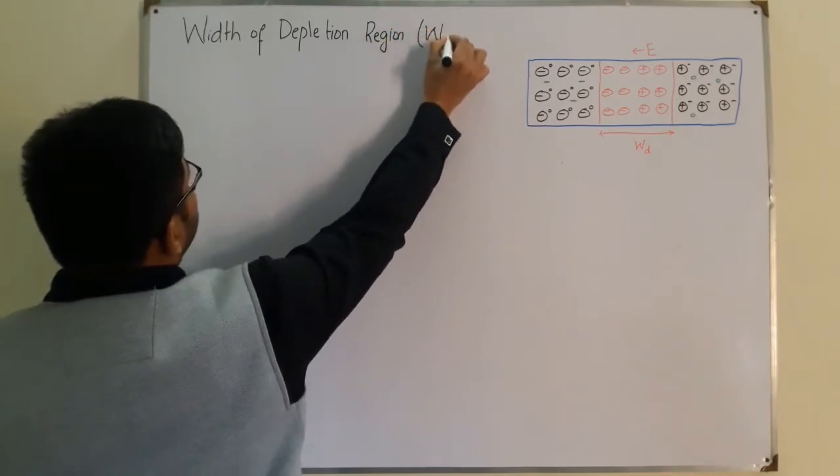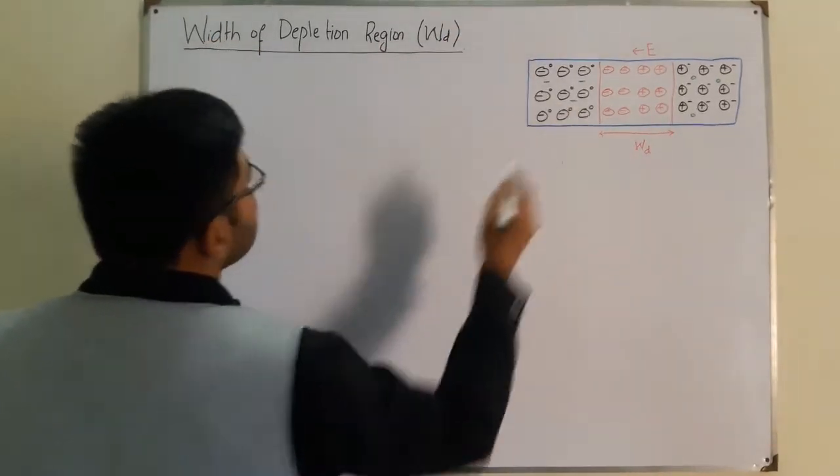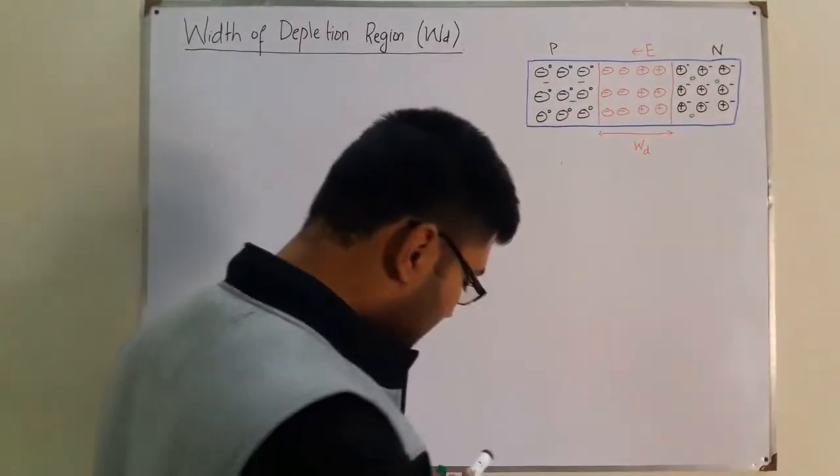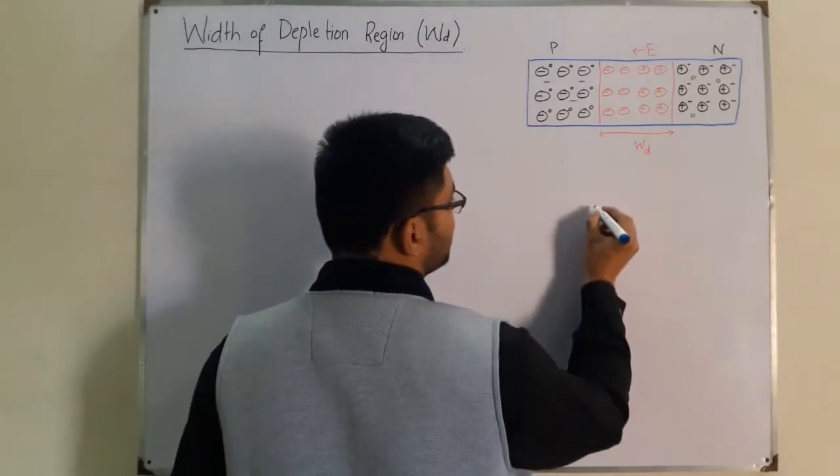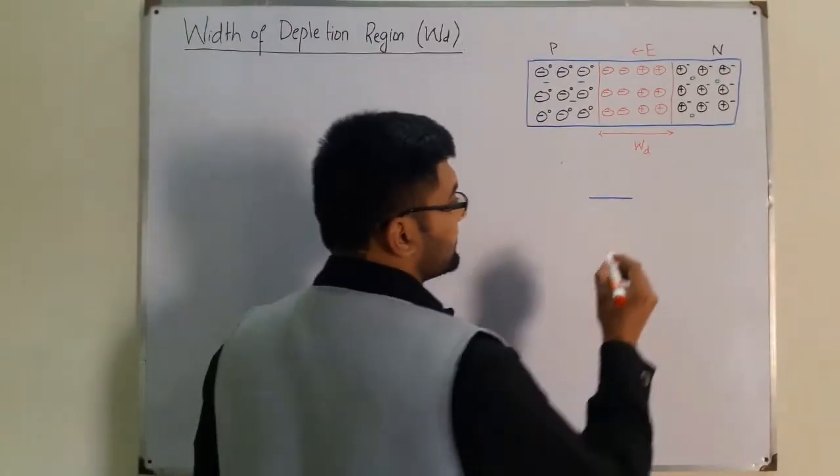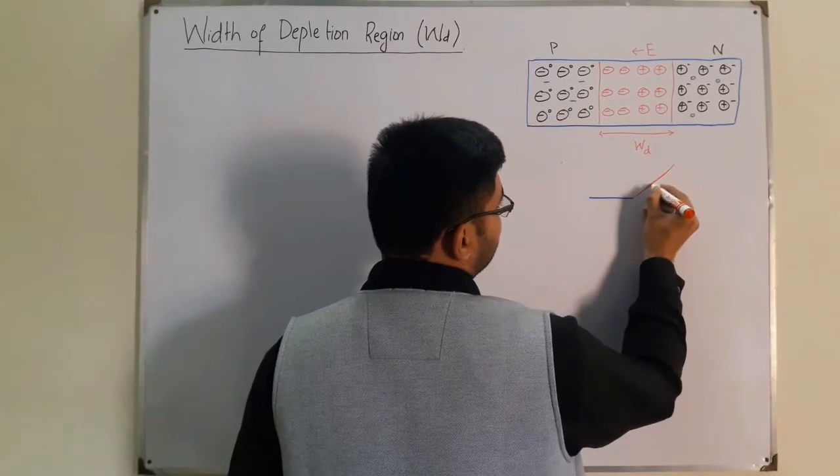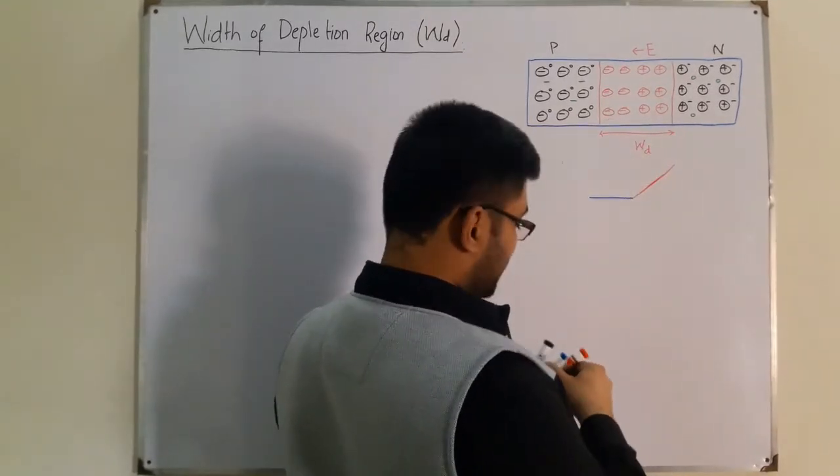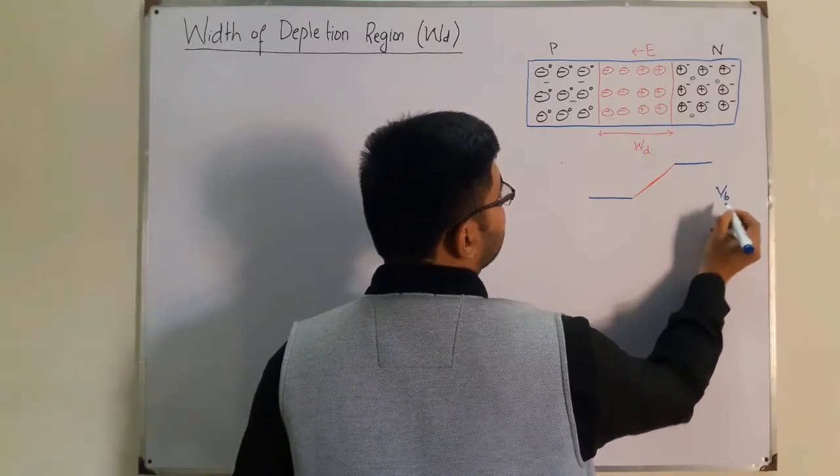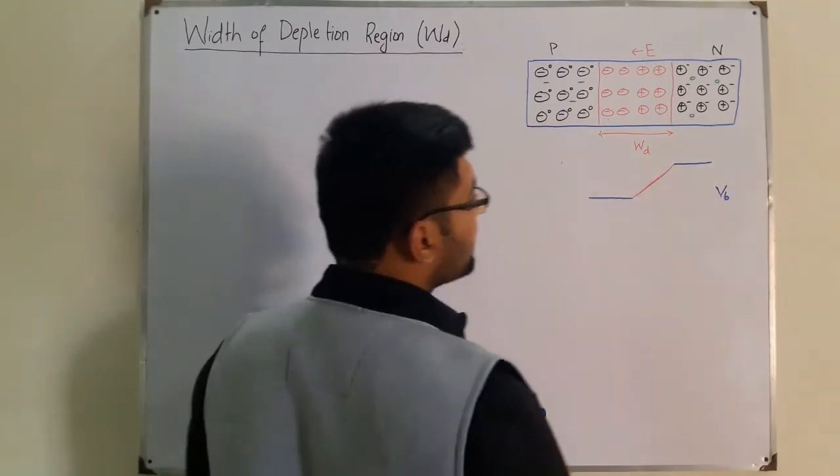The diagram is from the last video. This is a p-n junction diode with the p side and the n side. I forgot in the last video that the barrier potential is initially zero. As the process of diffusion takes place, it rises until its maximum value and this maximum value becomes constant. This is the graph for VB.